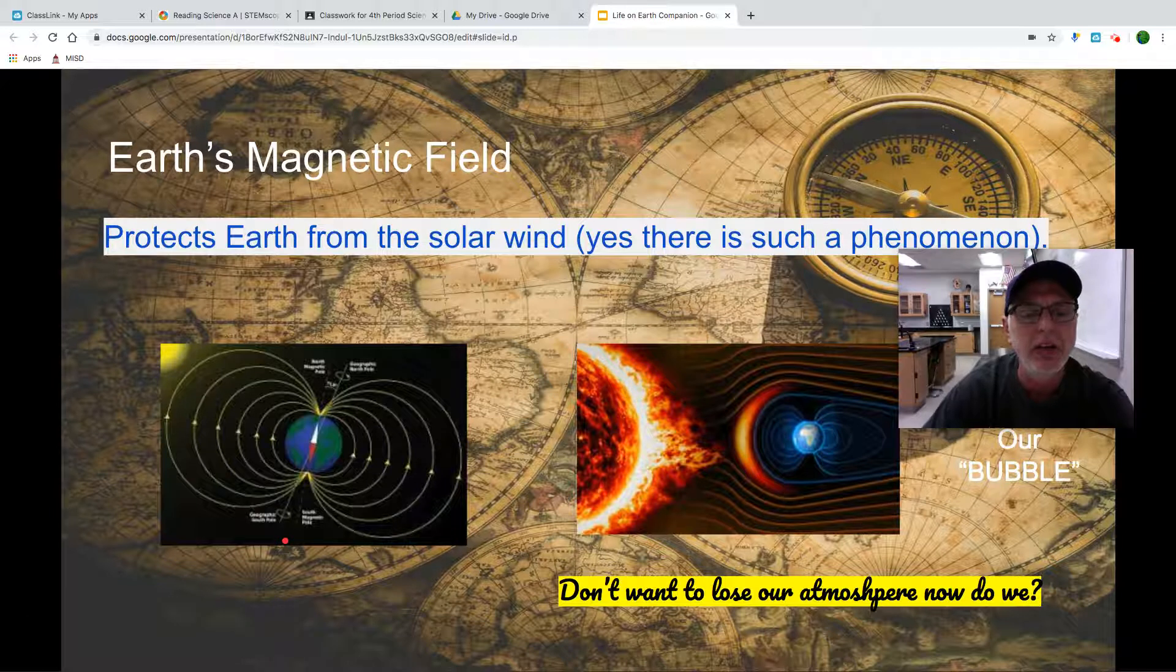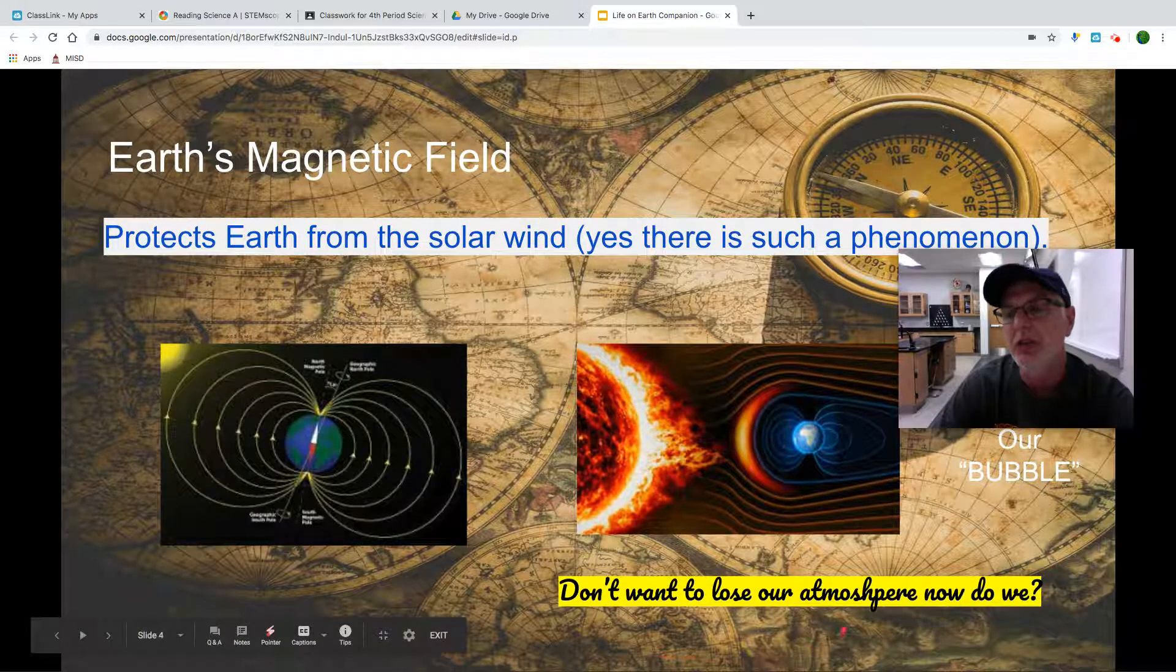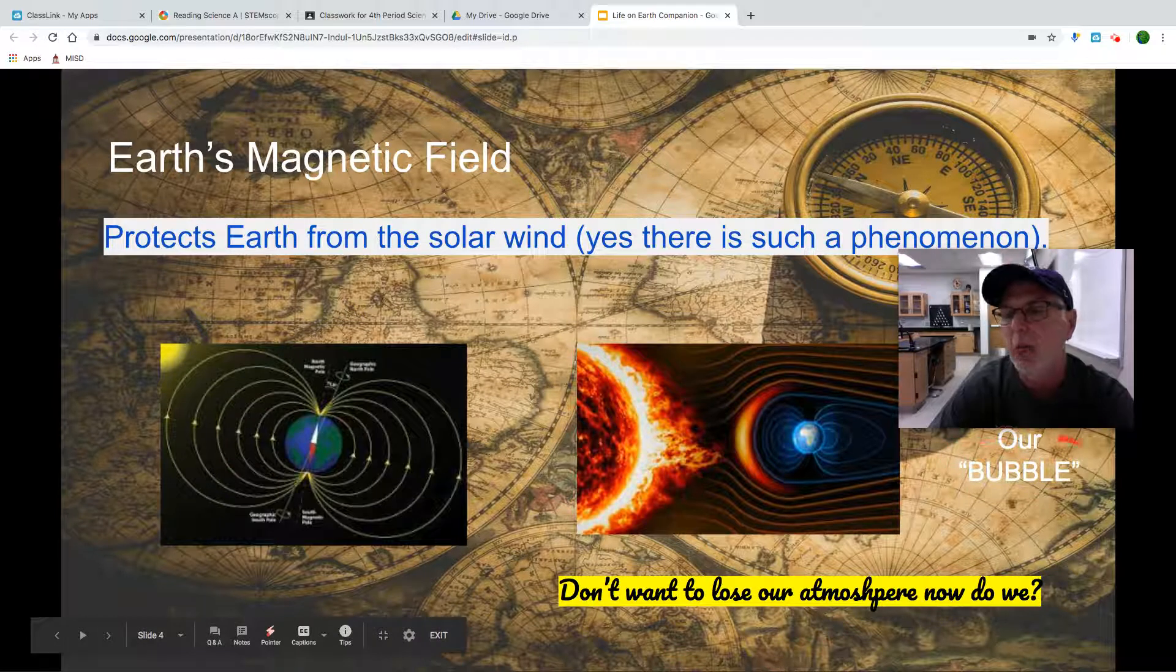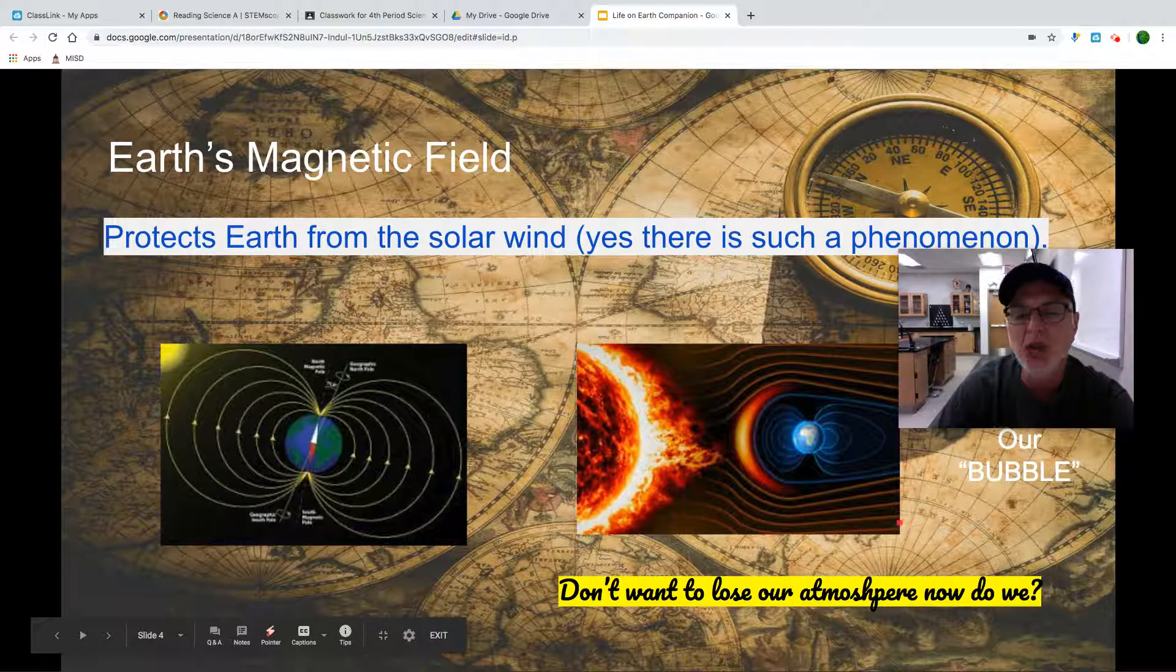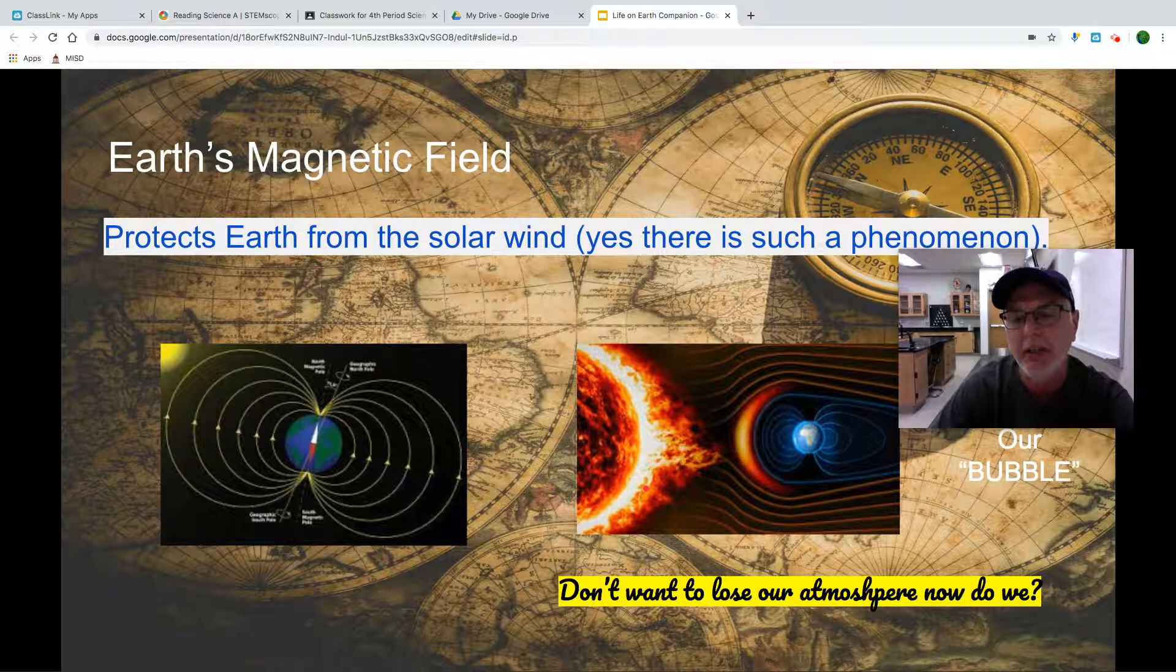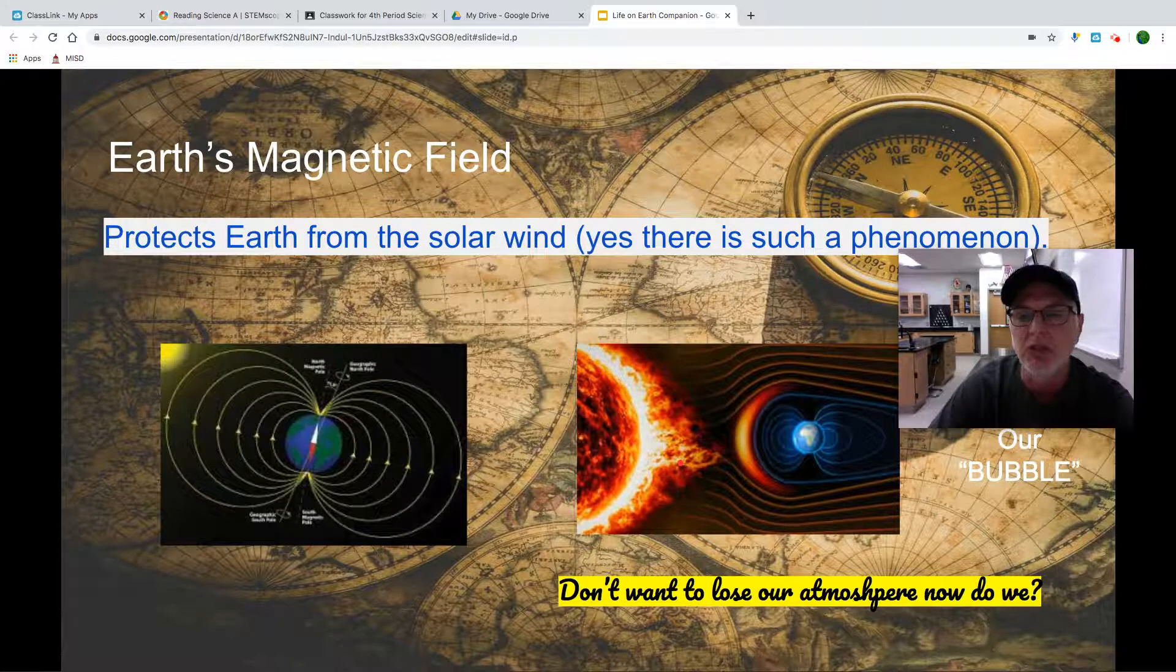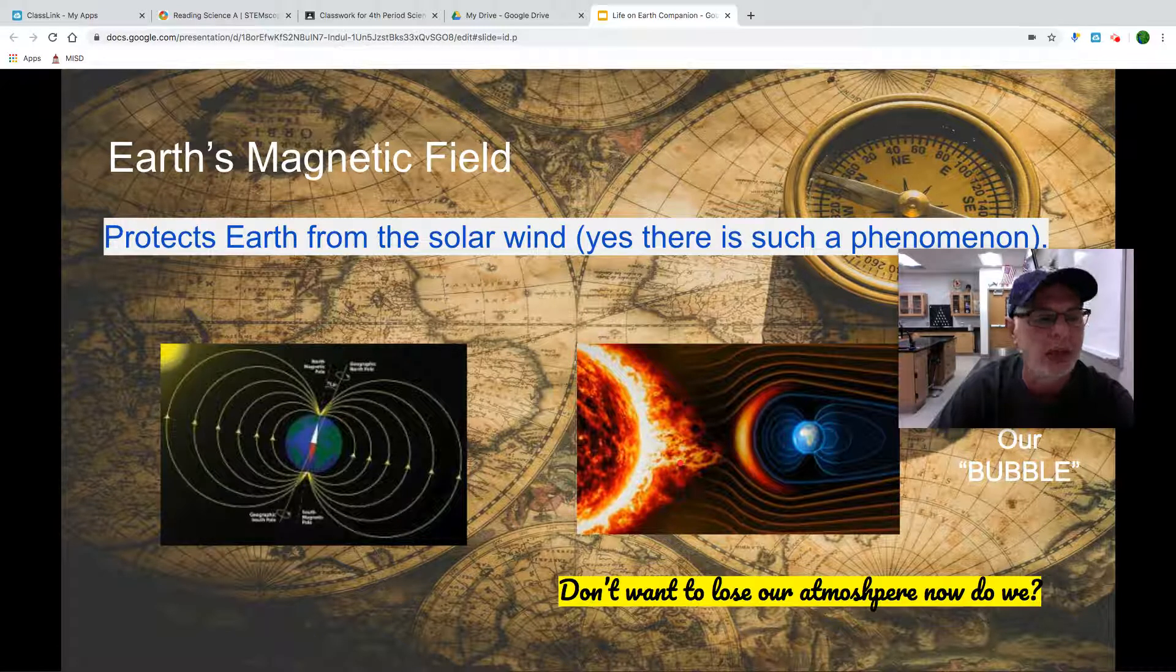Our magnetic field. This is very important. What it does is it creates what you could consider our bubble. Because what our sun does is it gives off a tremendous amount of energy, not only light and heat, but there's a lot of other energy coming from it that is considered the solar wind.